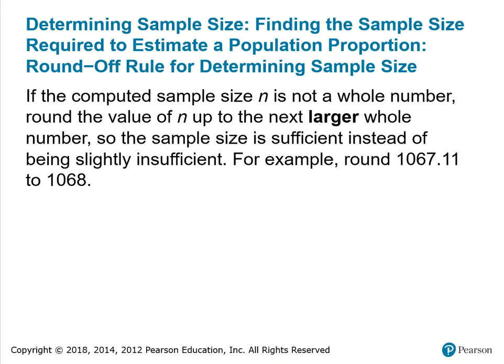For example, if you computed an N of 1067.11, you would use 1068 as your sample size to account for the extra fractional part. Notice this does not follow the normal rules of rounding.